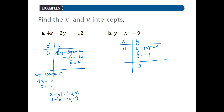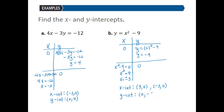If we let y equal zero and solve for x, we get x squared minus 9 is equal to zero. This is a quadratic equation we can solve by the square root property. Setting x squared equal to 9, we apply the square root property: x is equal to plus or minus the square root of 9, which is plus or minus 3. So the x-intercepts are (3, 0) and (negative 3, 0), and the y-intercept is (0, negative 9).